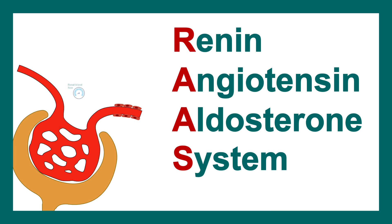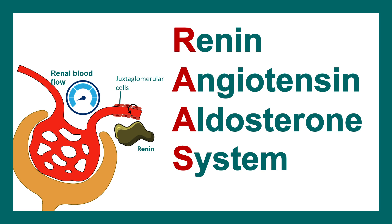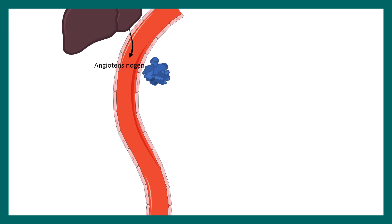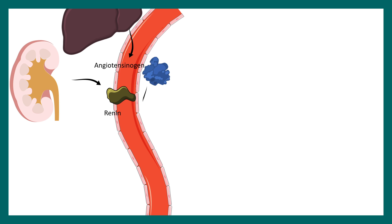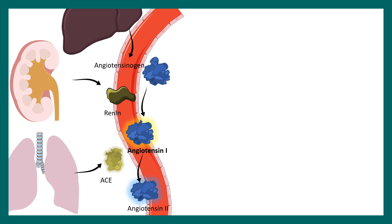It all begins when there is a drop in the glomerular blood pressure. The juxtaglomerular cells secrete a particular protein known as renin. Renin can convert liver-derived angiotensinogen into angiotensin-1. Further, angiotensin-1 gets converted to another active form known as angiotensin-2, with the help of the lung-derived angiotensin-converting enzyme.